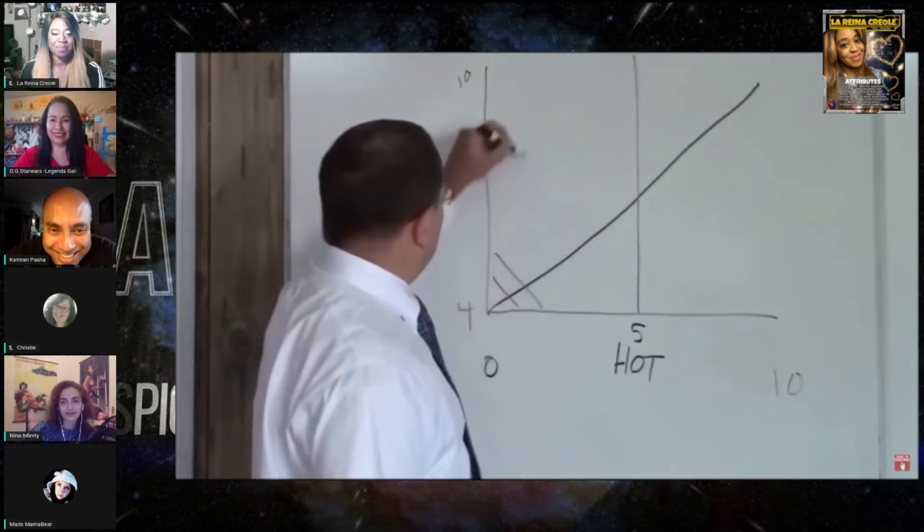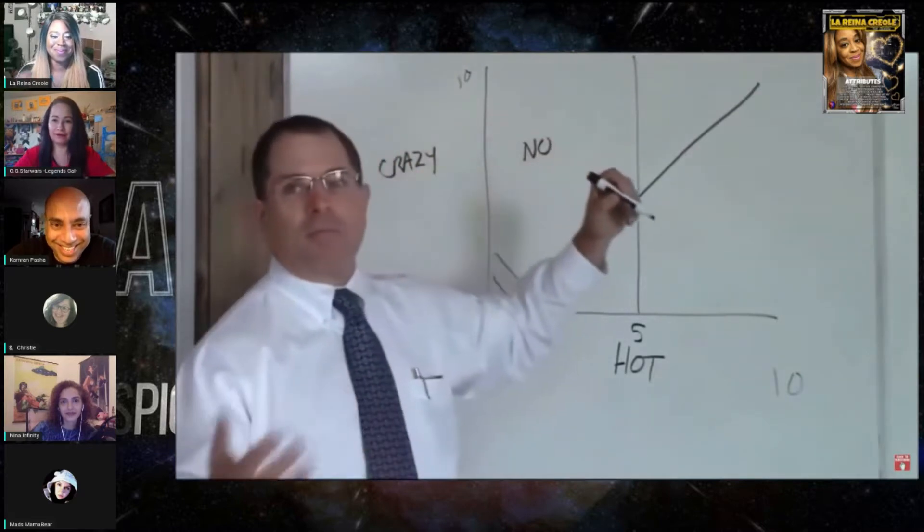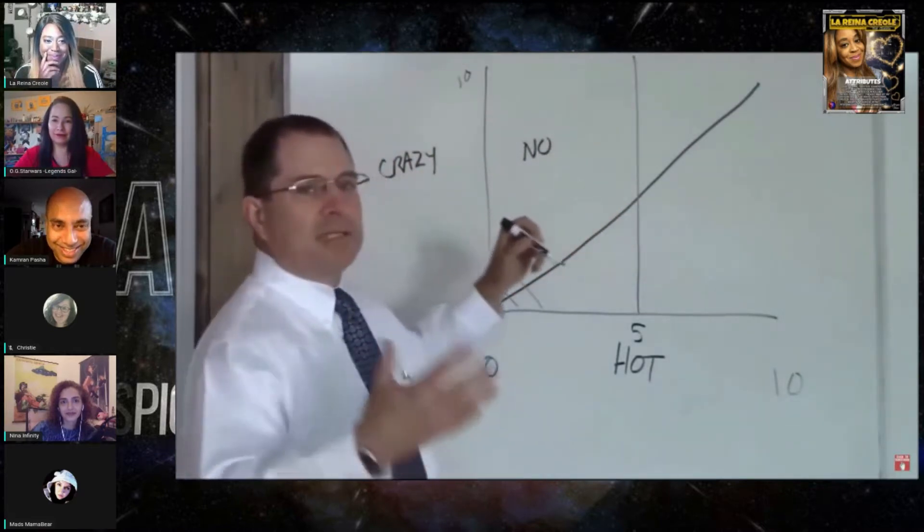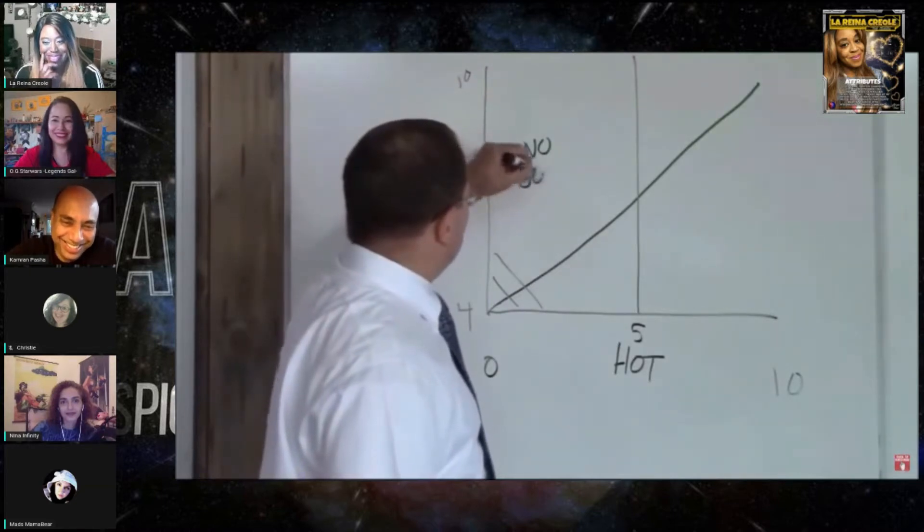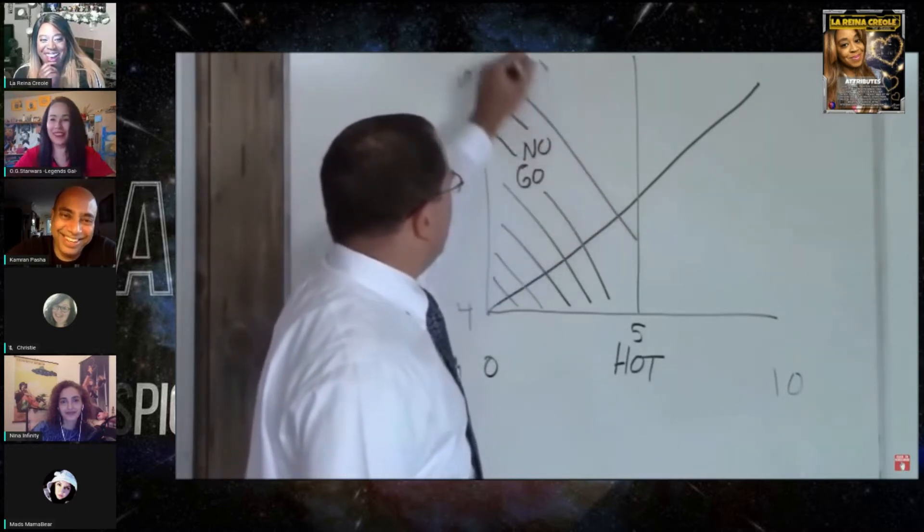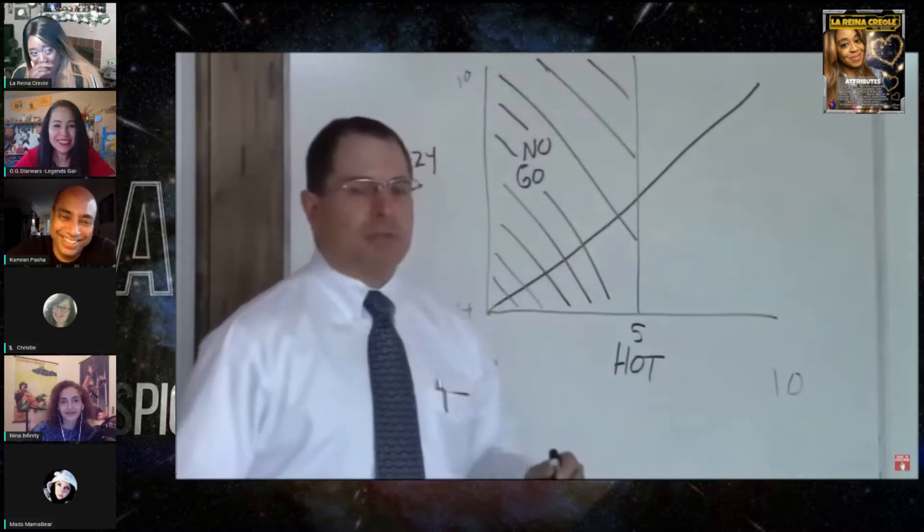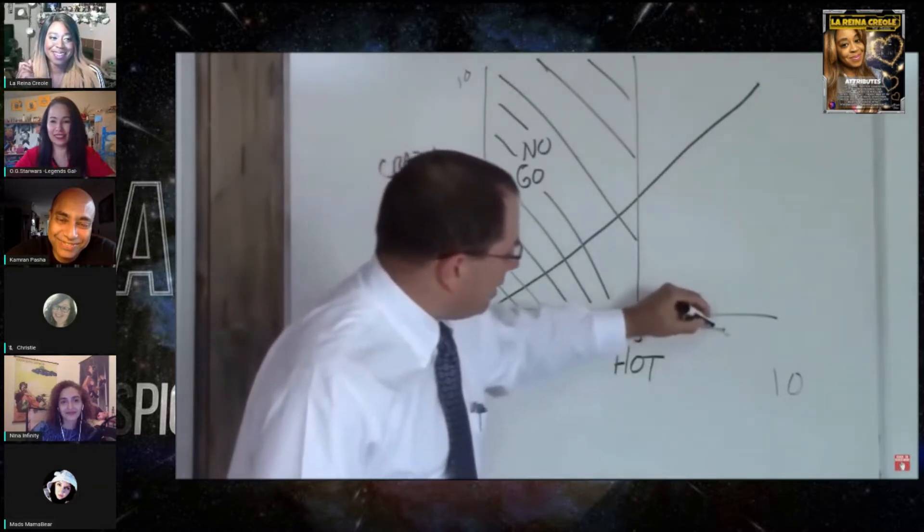This is your no-go zone. We do not hang around and date and marry women who are not at least in our mind a five. So this is your no-go zone, you don't go here. We just rule this out, life is better.